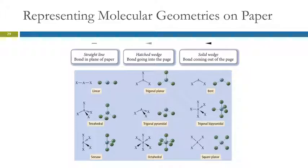It can be challenging to represent three-dimensional things on a two-dimensional piece of paper or a two-dimensional screen. And so this is what we use. We use a straight line to represent a bond that's in the plane of the paper or the screen. A hatched wedge is like a dashed line that's behind the screen. And a solid wedge is coming, is poking out at you. It requires a little bit of practice. Just do your best.